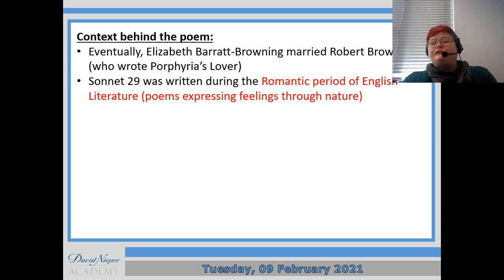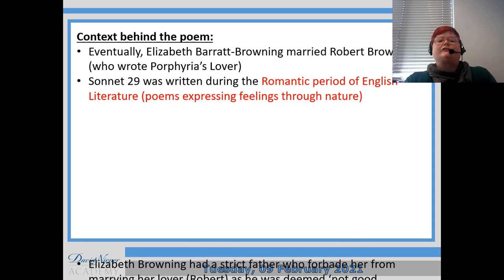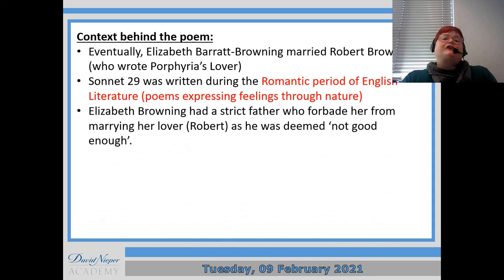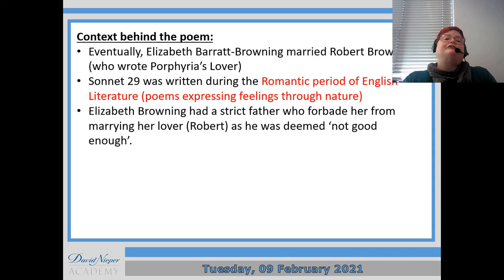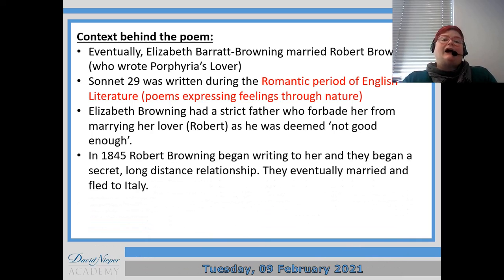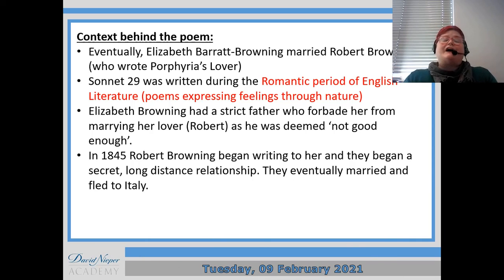Sonnet 29 was written during the Romantic period of English literature, so using nature to express feelings. Her strict father had banned her basically from marrying her lover Robert because he was deemed to be not posh enough, not good enough, not rich enough. So they had a long-distance secret relationship and eventually they got married and then fled the country to live in Italy.